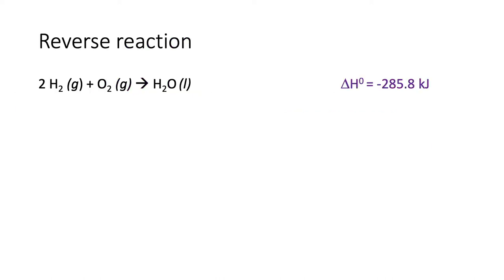Now we're going to talk about another principle of enthalpy of reaction: what happens when you have a reverse reaction. For example, if you put together two moles of hydrogen and one mole of oxygen, you get one mole of water, and the enthalpy of that reaction is negative 285.8 kilojoules.